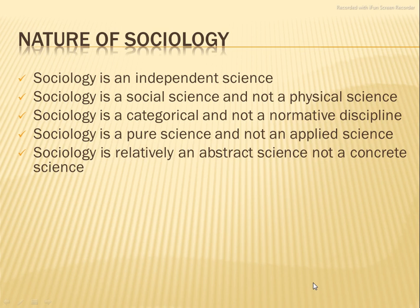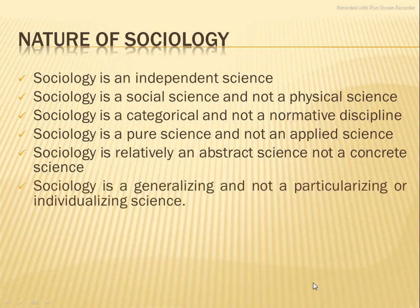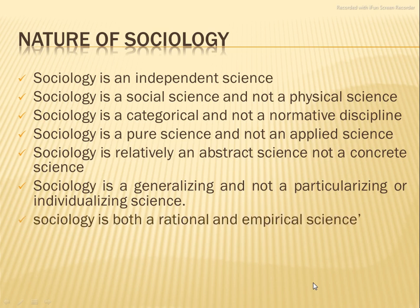Sociology is a relatively abstract science, not a concrete science. Sociology is a generalizing and not a particularizing or individualizing science — it does not study a particular individual person, but creates a general rule. For example, Punjabis mostly speak Punjabi — that is a generalization for Punjab state, not for any particular person. Sociology is both a rational and empirical science. Rational science reasons things out — the theory and the result. Empirical science works on facts: empiricism is an approach that emphasizes experience and the facts that result from observation and experimentation. Rationalism stresses reasons and the theories that result from logical inferences.